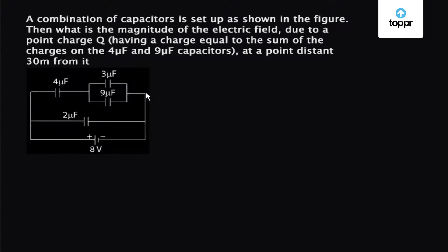Let's take a problem on capacitors. We are given a combination of capacitors in the circuit. It is required to find the electric field due to a point charge Q, which is the sum of the charges on the 4 microfarad and 9 microfarad capacitors, at a point 30 meters away from the point charge.